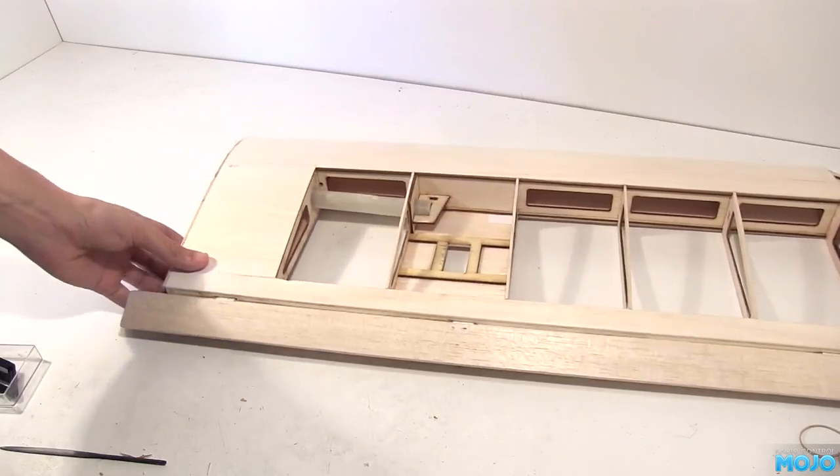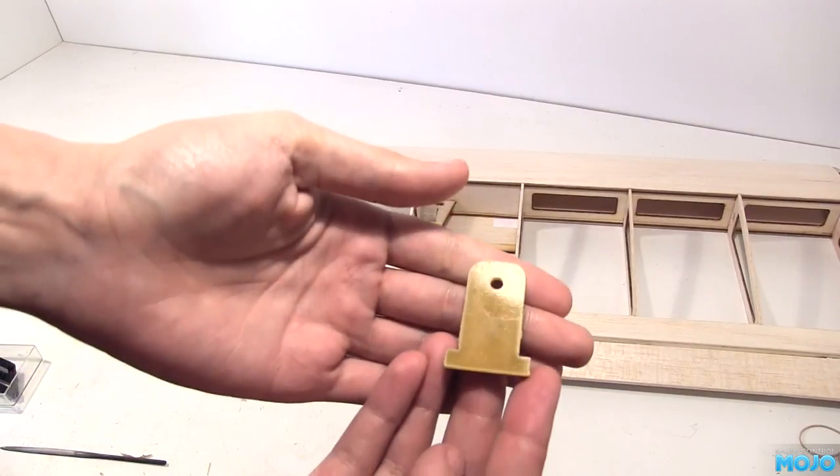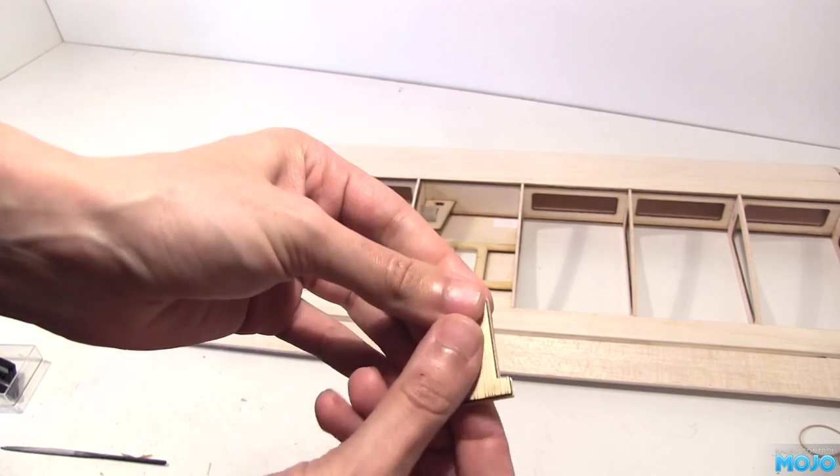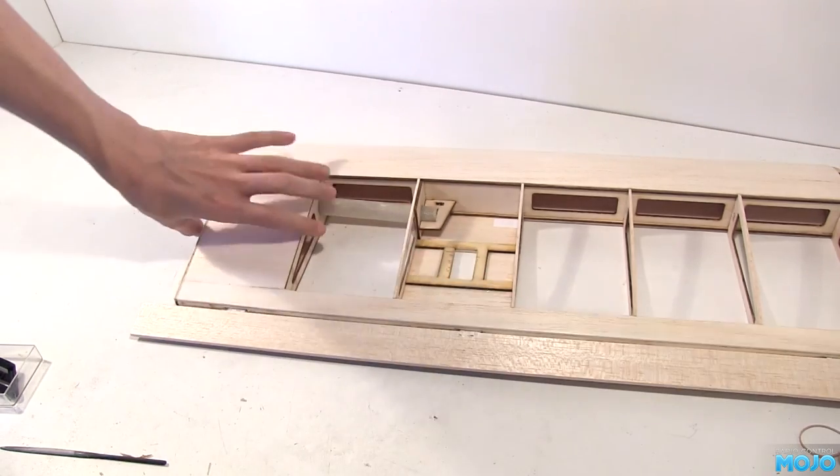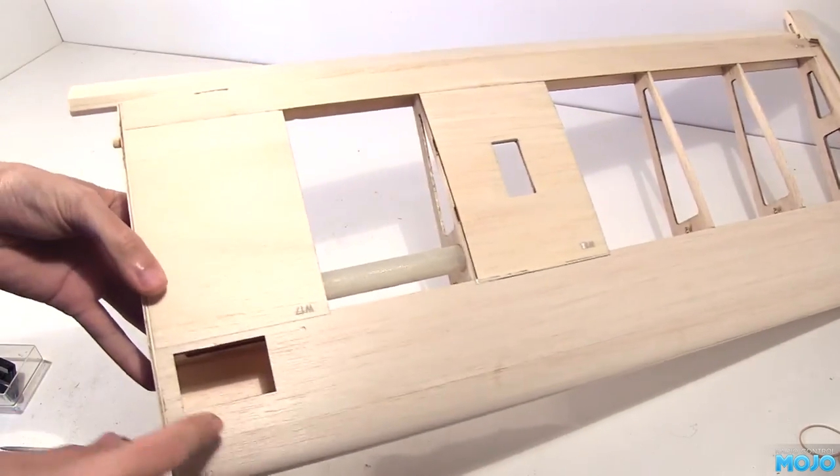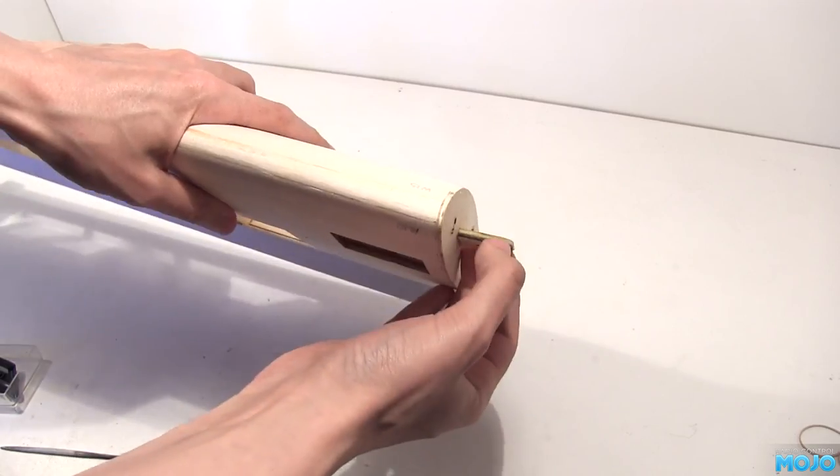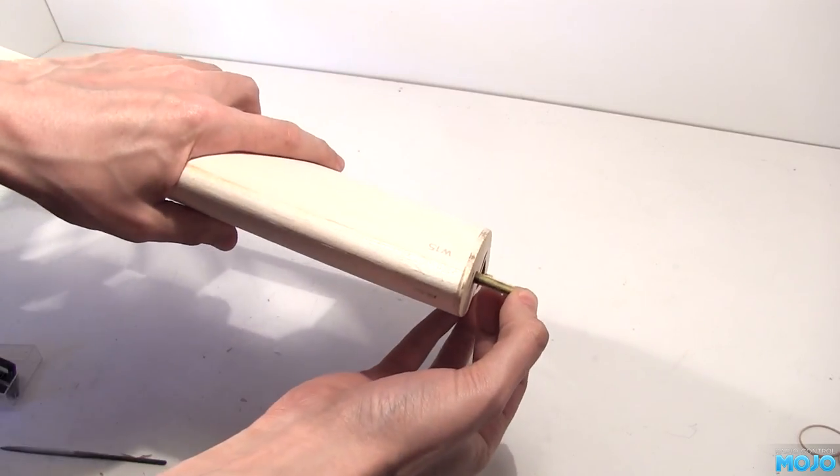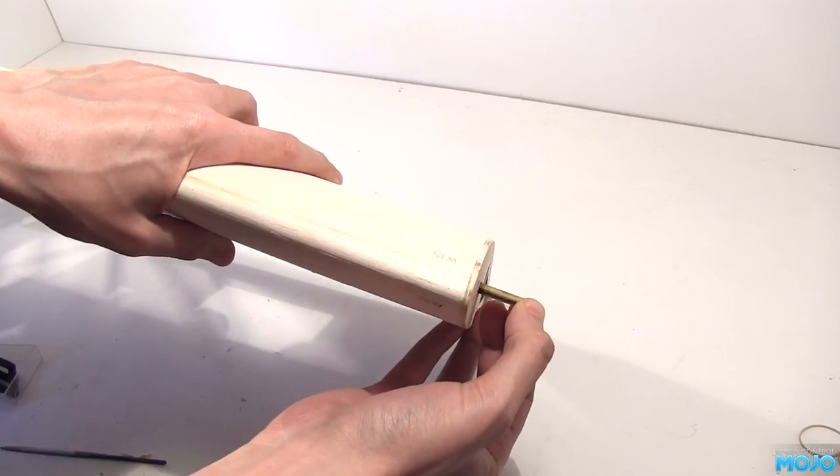Right then, that's it for the wing. The only other bit is the mounting tab. But there's no way to align it until the fuselage is built. We need to be able to fit the wings into their slots and fit the mounting screws to make sure it's in exactly the right place. So we'll leave that for now.